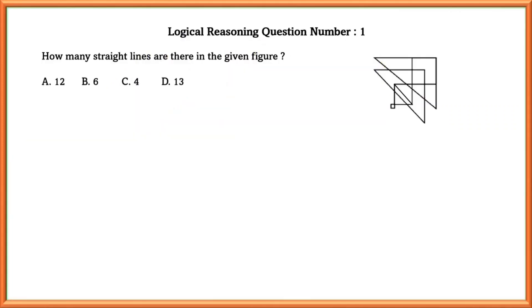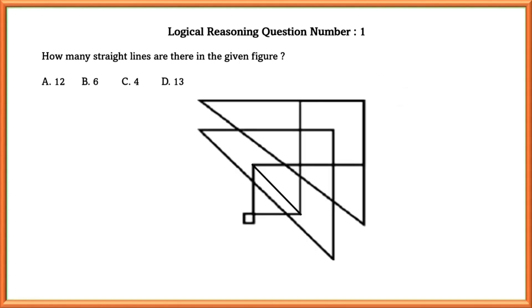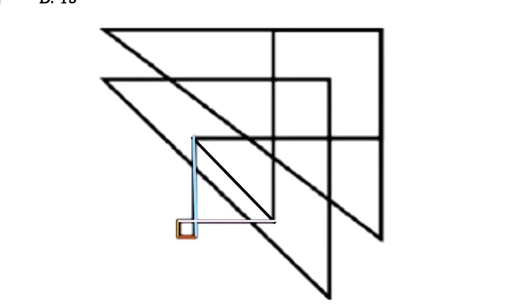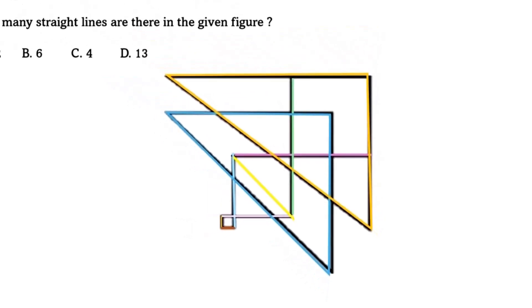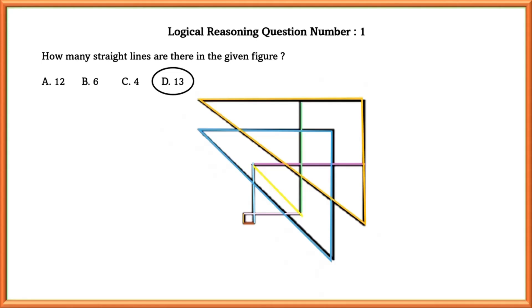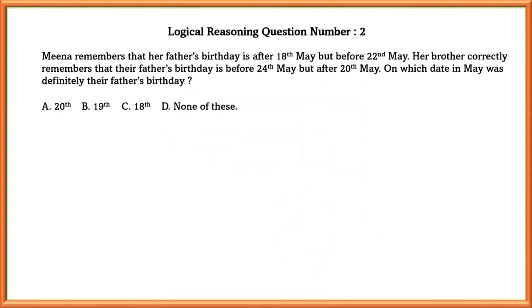Logical reasoning question number one: how many straight lines are there in the given figure? Let us count — one, two, three, four, five, six, seven, eight, nine, ten, eleven, twelve, thirteen. So there are thirteen straight lines in the given figure.